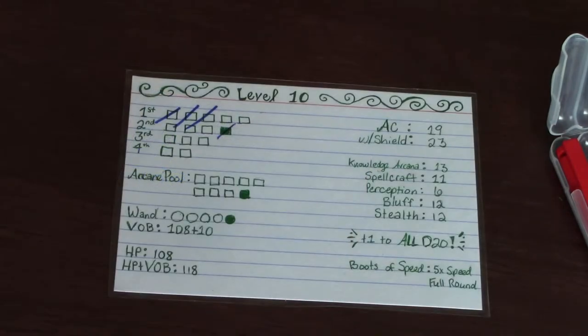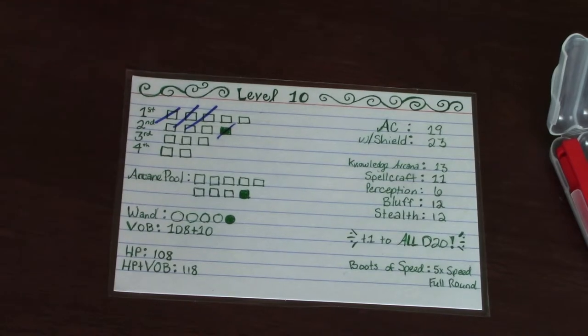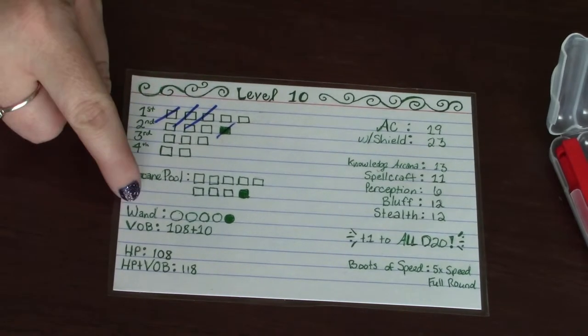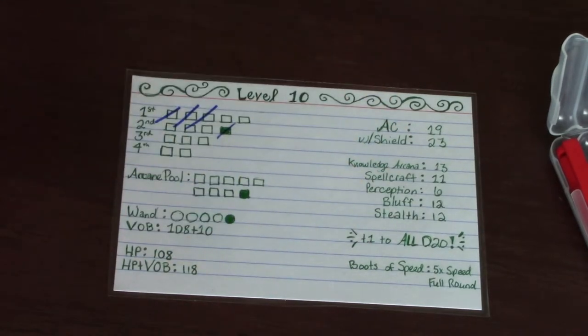And on this card, you know, I have my count of spells I can take for the day or use for the day. I have my arcane pool, wand charges, and then just some little notes about my character specifically. So these are much different looking cards for each of my characters.